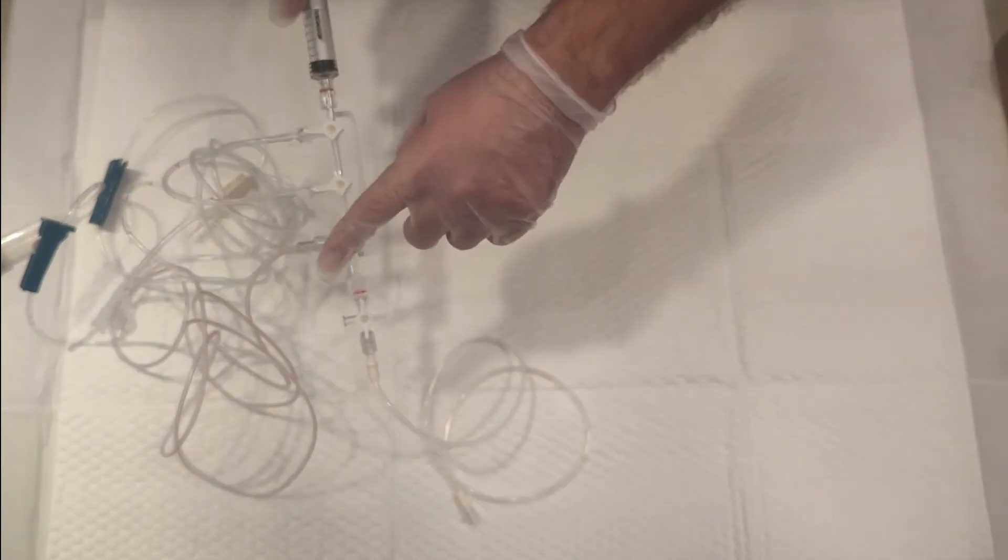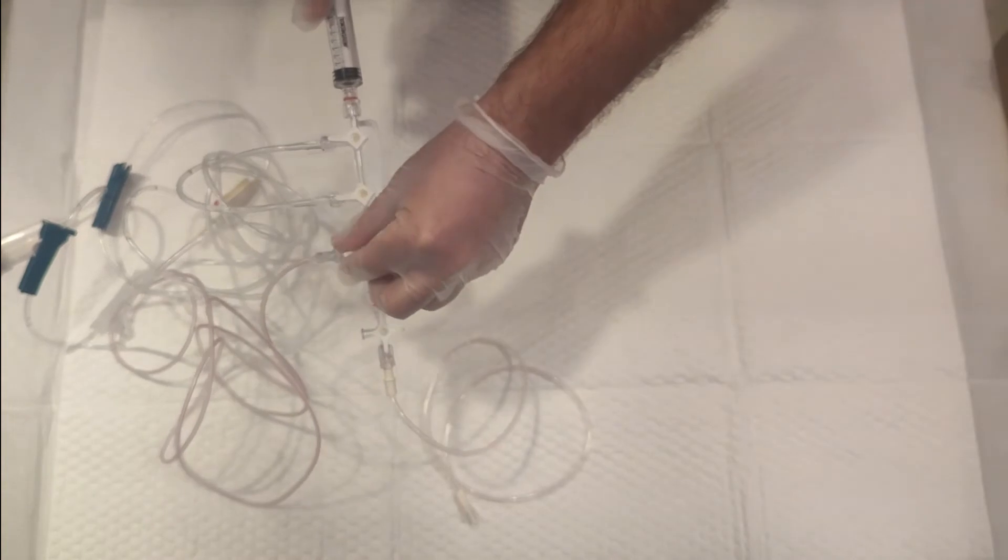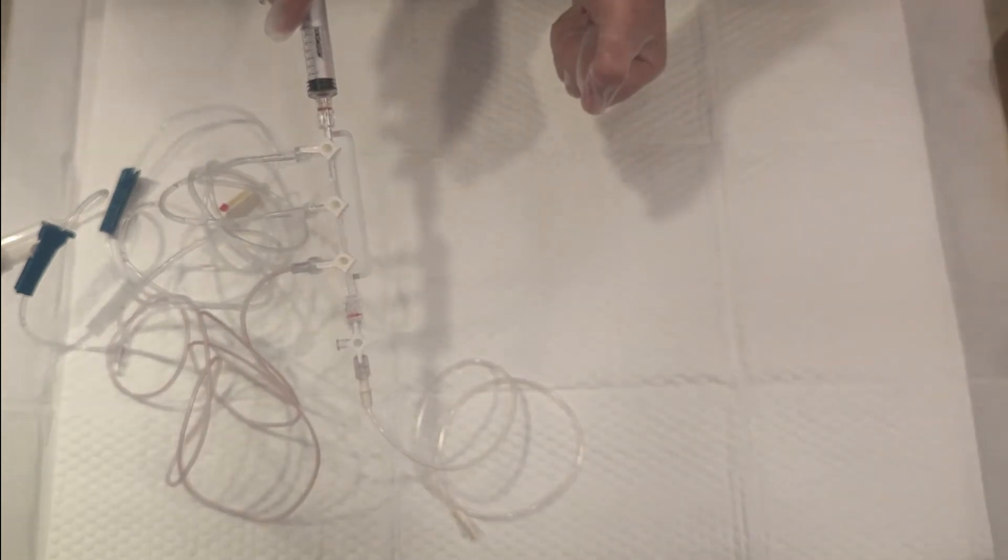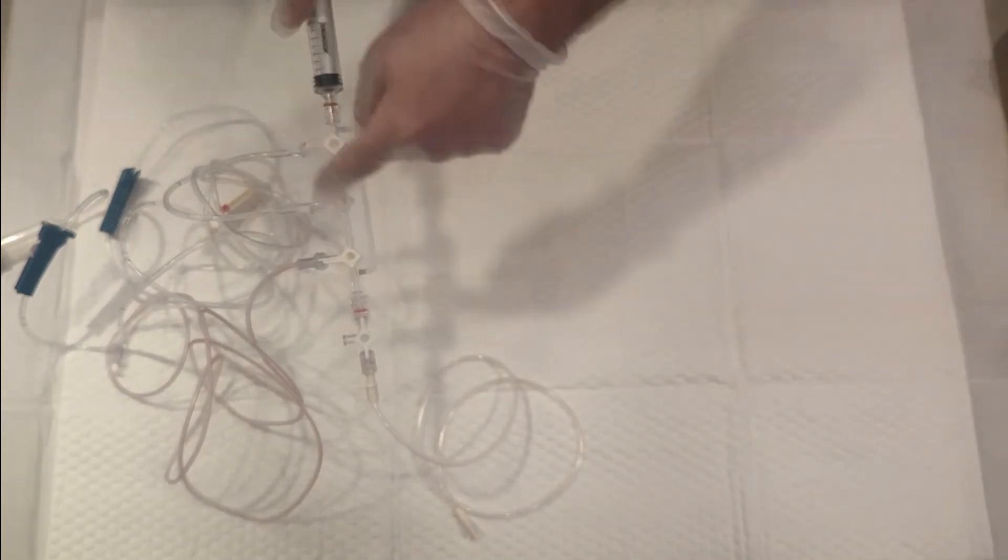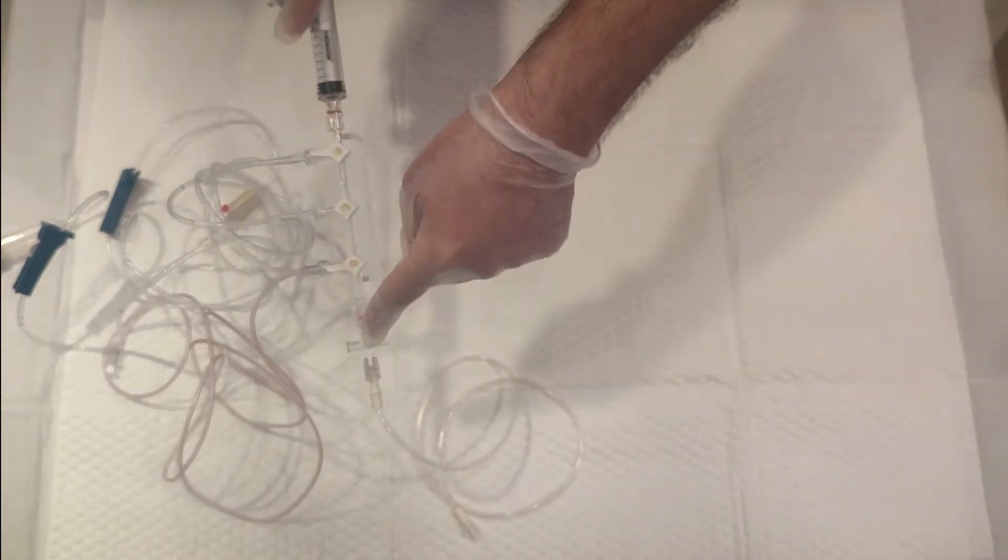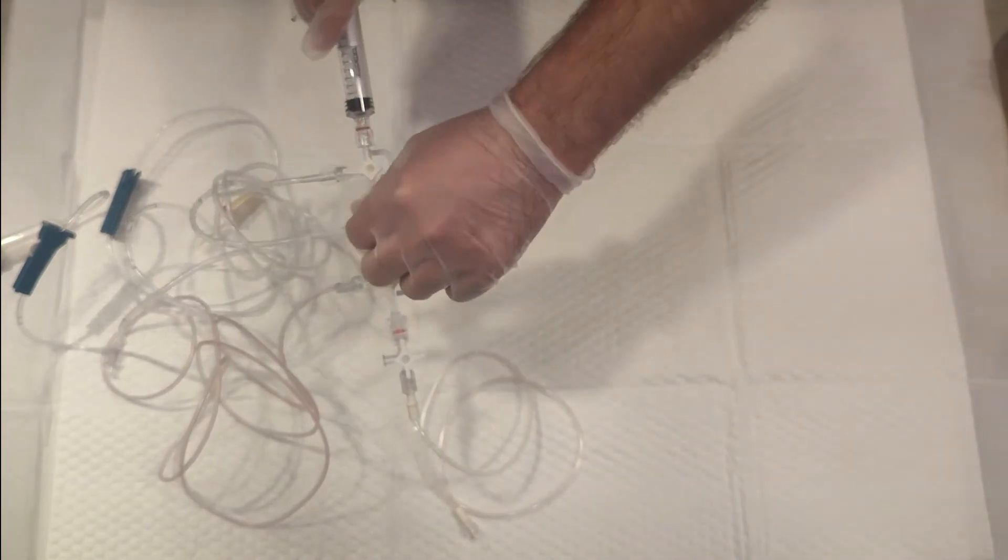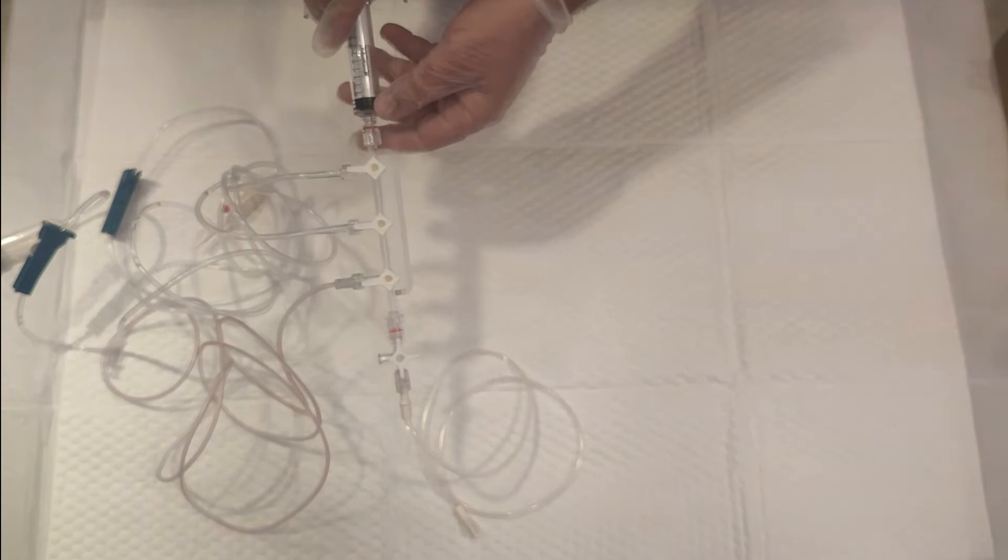For the second one, if it's already a pressurized saline bag, turn it off towards you and on towards the pressure bag and patient side. You'll see pressurized saline coming out. Once it flushes from this line to remove the air, close it towards that side. The third one is the contrast, which is the other way around.